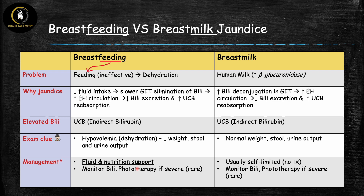Management: if the problem is insufficient fluids and nutrition, the treatment is to provide fluid and nutrition support. You must also monitor bilirubin levels, just as with any neonate with hyperbilirubinemia, because if unconjugated bilirubin rises too high it can cross the blood-brain barrier and cause kernicterus. Rarely, if levels are very high and jaundice is severe, you would intervene with phototherapy to prevent kernicterus.